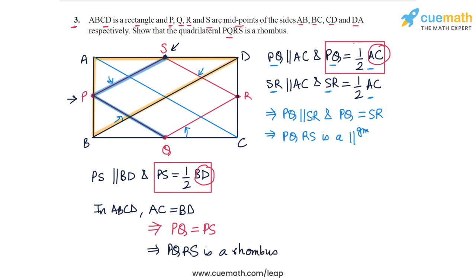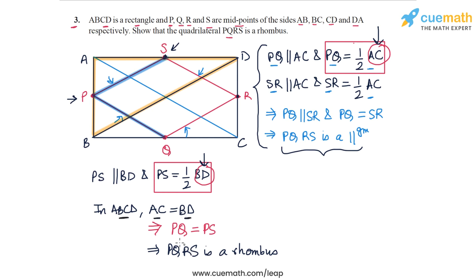To summarize: in the first part of the proof we proved that PQRS is a parallelogram — this is something we had done in question 1, recapped briefly here. Then we proved that the adjacent sides of PQRS are equal. PQ is equal to half of the diagonal AC of the rectangle and PS is equal to half of the diagonal BD. We then used the fact that in any rectangle the diagonals are equal, and hence the adjacent sides PQ and PS are also equal. So PQRS is a rhombus. This completes question number 3.